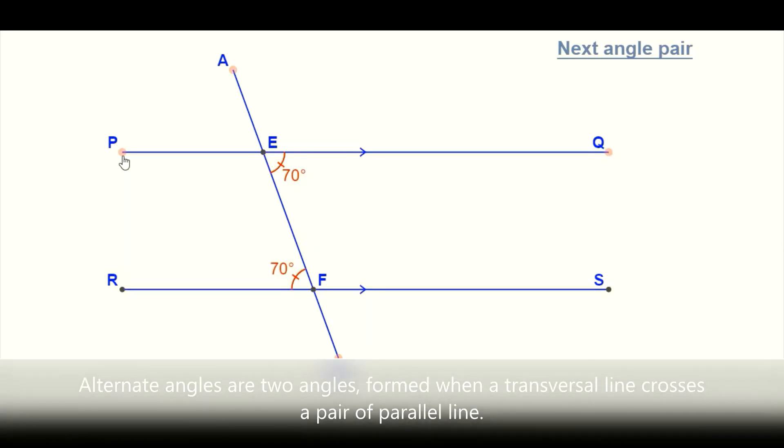Of the parallel lines PQ and RS, these parallel lines are intersected or cut by a transversal AB.